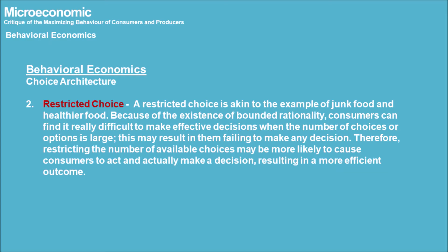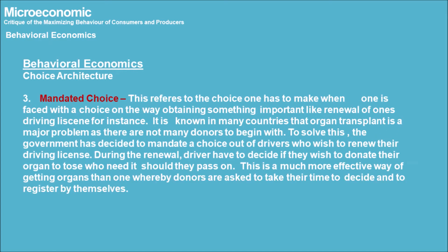Choice Architecture 2: Restricted Choice. A restricted choice is illustrated by the example of junk food versus healthier food. Because of the existence of bounded rationality, consumers can find it difficult to make effective decisions when the number of choices or options is large, which may result in them failing to make any decision. Therefore, restricting the number of available choices may be more likely to cause consumers to act and make a decision, resulting in a more efficient outcome.